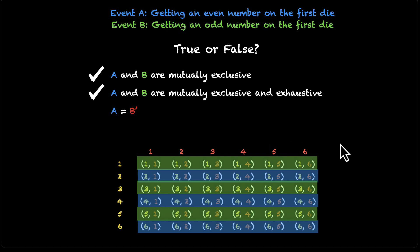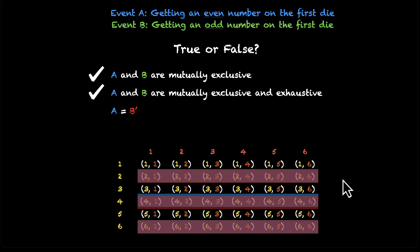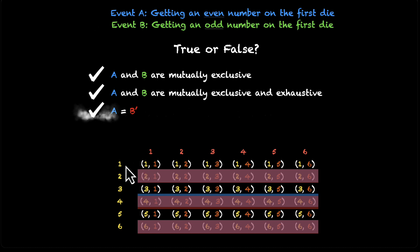Statement 3: A is equal to B'. B is the green zone, so B' (its complement) is everything outside the green zone. That is exactly the blue zone — exactly equal to A. A and B' are one and the same thing, so yes, A equals B'.